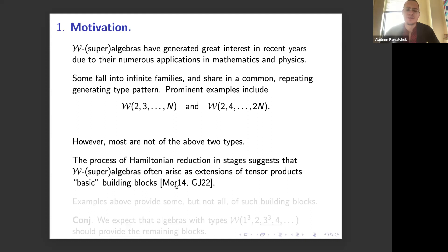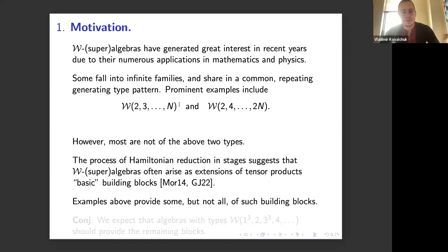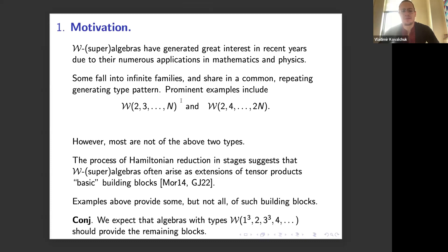Not every W algebra or affine coset would be of those two types — of course, many more things can happen. There is a conjectural process of Hamiltonian reduction in stages that suggests you can decompose many of these W algebras as extensions of tensor products of certain building blocks. This was originally suggested in Morgan's thesis, and Naoki and Thiebaud did some work on that. Shigenori and Justine have verified this in type A up to rank 5, so there's considerable evidence.